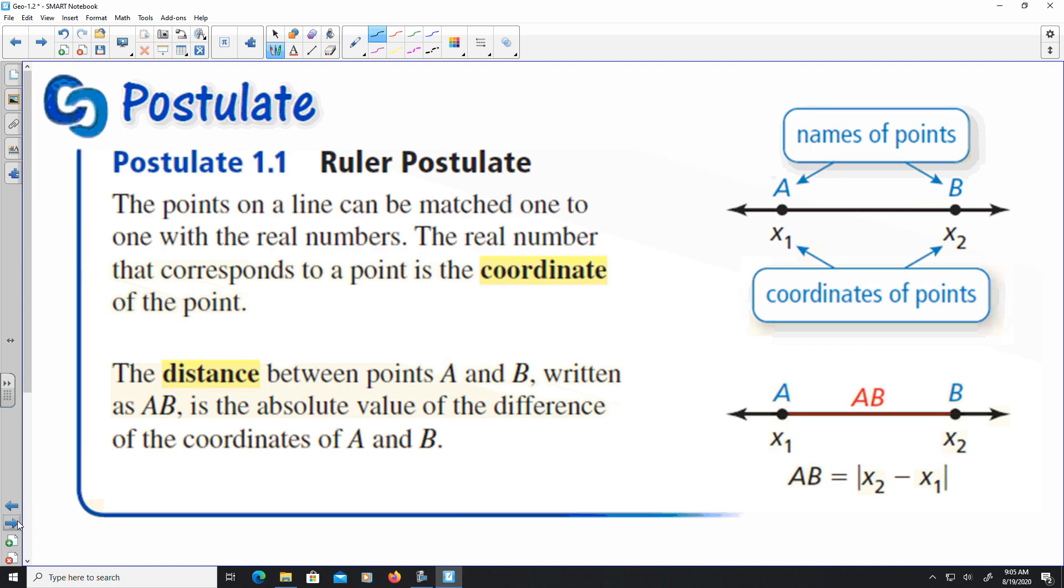We have what they call the ruler postulate. Ruler postulate simply states that the points of a line can be matched one to one with real numbers. The real number that corresponds to a point is the coordinate of the point. And the distance between A and B can be written as AB is the absolute value of the difference of the coordinates of A and B. So what they're saying is if x1 was 10 and x2 was, let's say, 4, and they're saying that this is the formula which would be x2 minus x1. So this would be like 4 minus 10. 4 minus 10 is negative 6, but because you get the absolute value, it's positive 6. Remember, distance is a positive number.